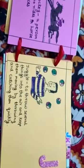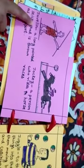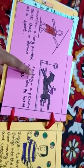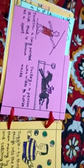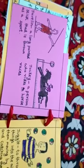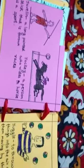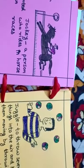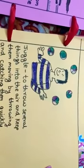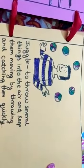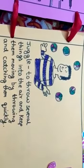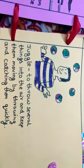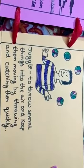The next alphabet is J. The first word is javelin, a long pointed stick that is thrown as a sport. The second word is jockey, a person who rides in horse races. And the third word is juggle. Juggle means to throw several things into the air and keep them moving by throwing and catching them.